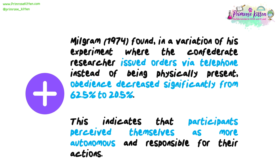Milgram, 1974, found in a variation of his experiment where the confederate researcher issued orders via telephone instead of being physically present, that obedience decreased significantly from 62.5% to just 20.5%. This indicates that participants perceived themselves as more autonomous and responsible for their actions.